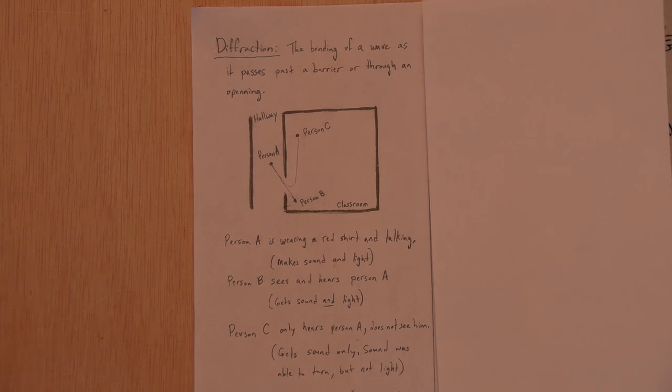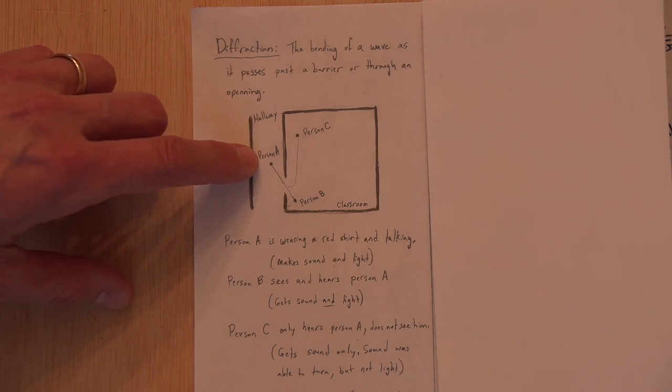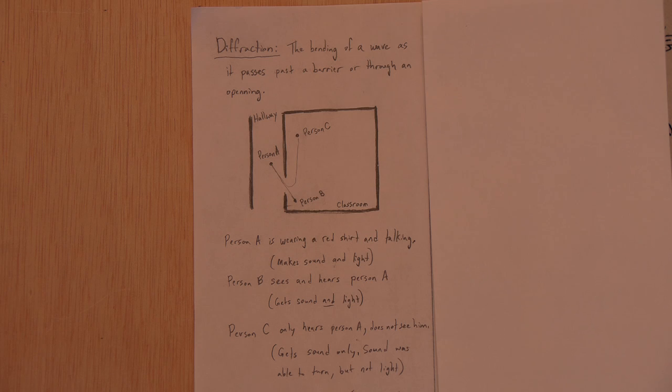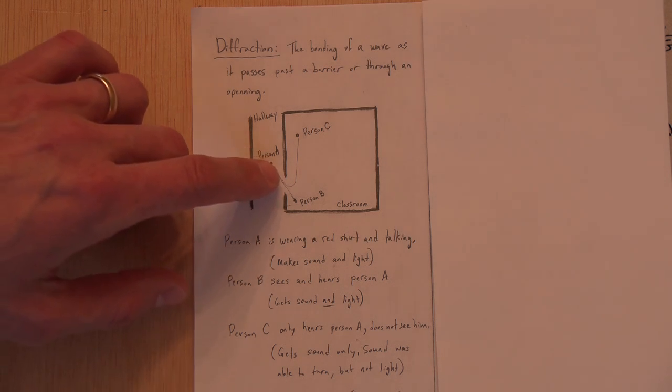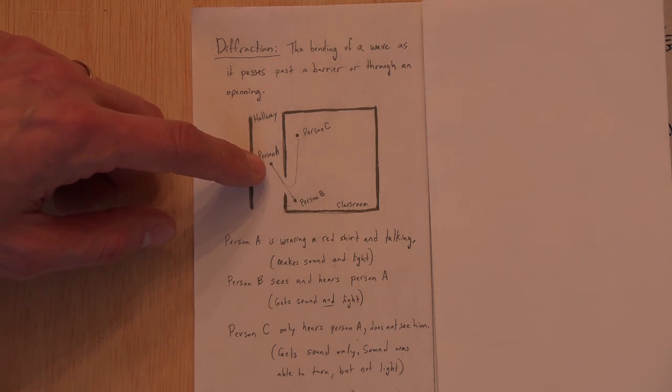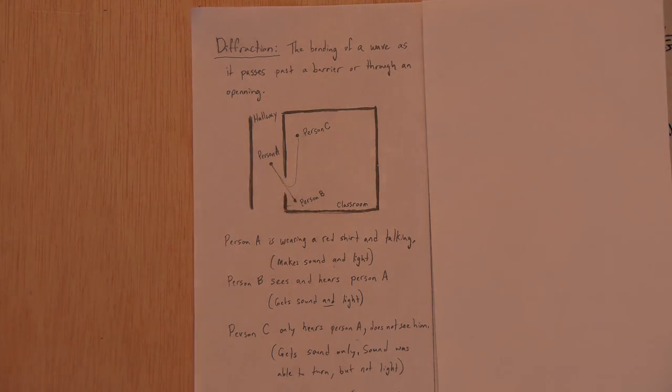One person could stand here. And what I could do at that moment is I could talk and create a sound with my voice. So I'm creating sound waves. And also I'm creating light waves because the hallways have lights on. And the lights are hitting my shirt and bouncing off. So off of me is sound and light coming through the doorway.